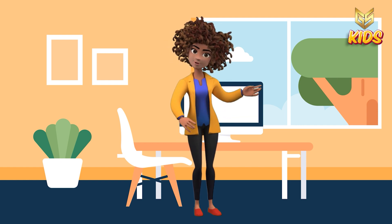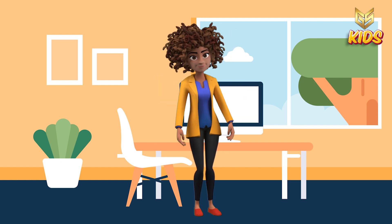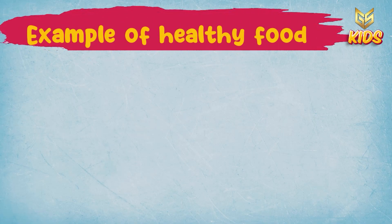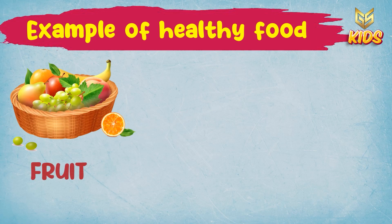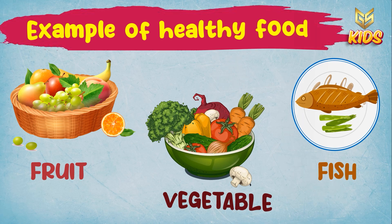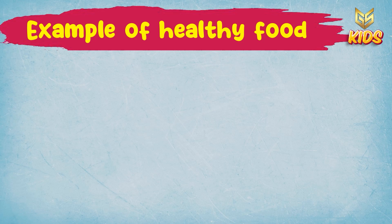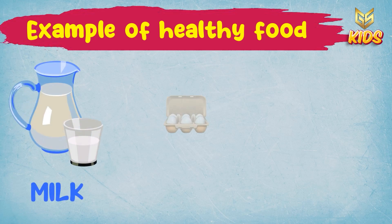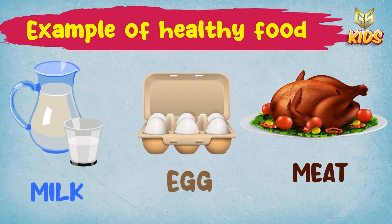So now we will see some examples of healthy food. Look at this picture — what do you see? Fruits, vegetables, fish. These are healthy food, and we should always try to eat healthy food. Another example of healthy food: milk, egg, and meat. These are healthy food.